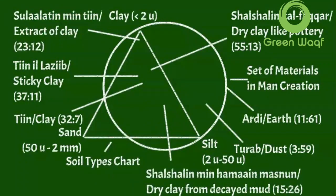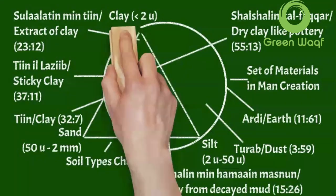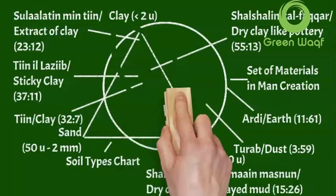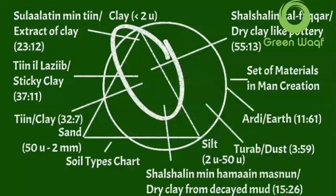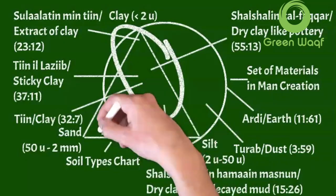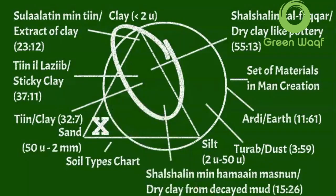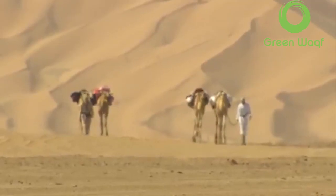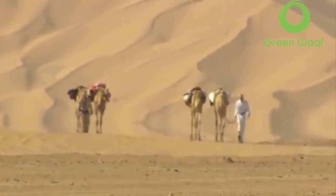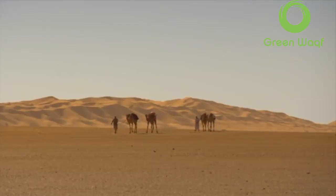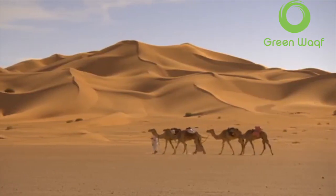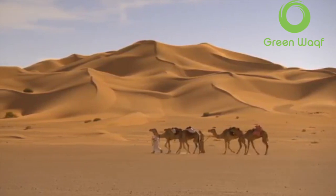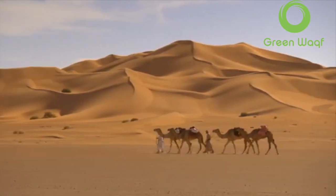From what has been revealed, we can now map these main ingredients of human creation. Interestingly, there is no human creation from sand. Because humans are not created from sand, but the majority of their raw materials are clay or even pure clay.